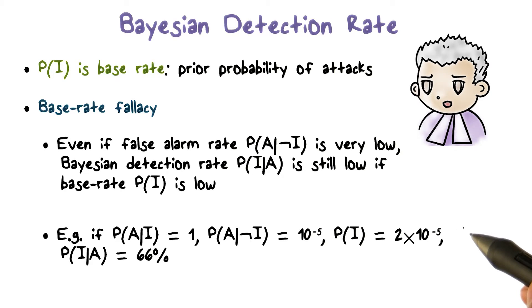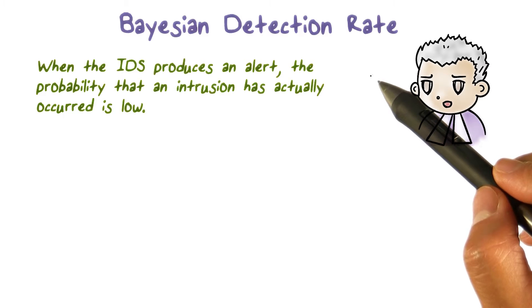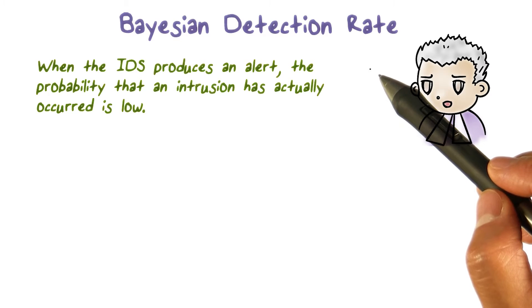So the base-rate fallacy says that as long as the false alarm rate is not zero, then when the IDS produces an alert, the probability that an intrusion has actually occurred is also low.